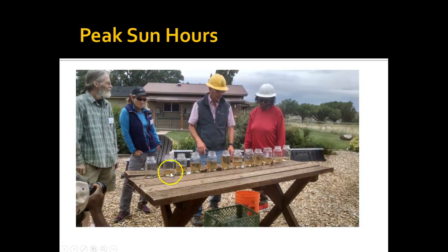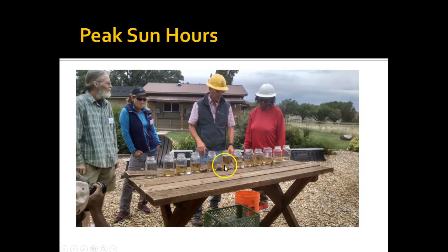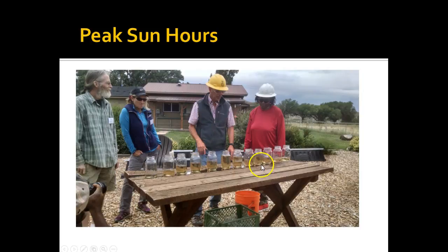So if you can imagine — these are glass jars — and there is some water with a little bit of food coloring in it. If you can imagine that each of these jars is an hour of the day, and how deep the water is indicates your irradiance, your sort of average irradiance over that hour. So you can see at the very beginning of the day there's a tiny bit, and then each hour it slowly increases until we have noon, and then it slowly decreases.